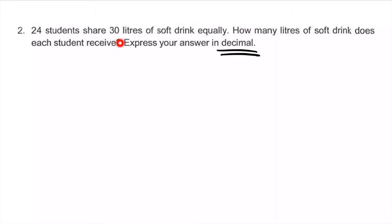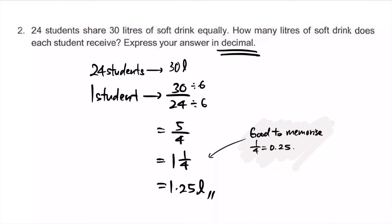24 students share 30 liters equally. How many liters? Important to note we're not converting to milliliters. Special requirement: answer in decimal. We'll show 24 students share 30, so each student, meaning one student, gets 30 liters divided by 24.